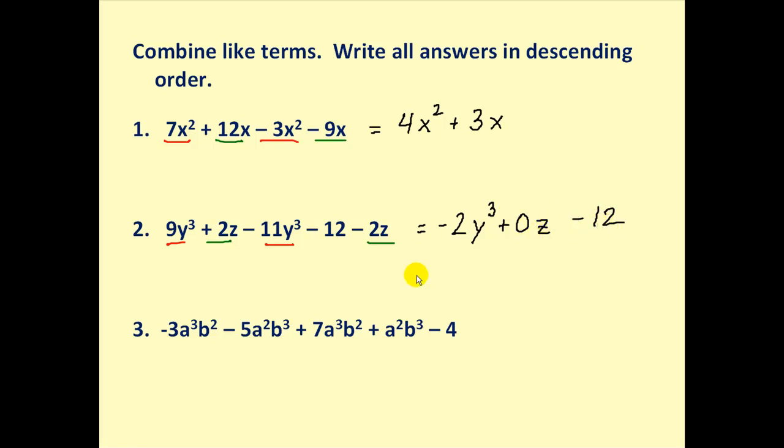And then notice we have this minus 12 left over. We also have to include that. Now notice this term has a zero coefficient, so that would be 0. So we can rewrite this as negative 2y cubed minus 12. We don't want to leave 0z in our simplified expression.